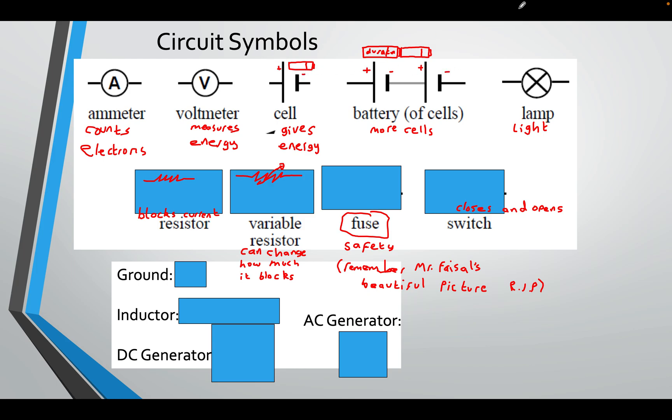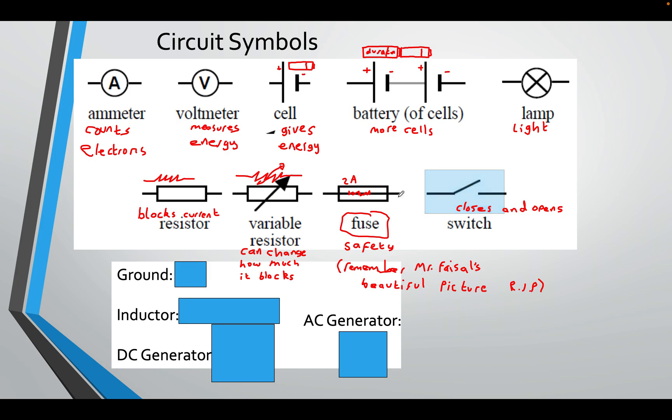A lamp has an X in it. A resistor blocks the current and it looks like a rectangle or a squiggly line. A variable resistor, also a rectangle or a squiggly line, but with an arrow to show that you can change the value of how much the resistance is. A fuse is a safety device. This is a resistor with a wire in the middle, a straight wire in the middle. And what happens is electrons flow through it. And if the current is too much, it's designed to break. If I can have a maximum current of two amps, that means anything more than two amps, this fuse will break. We also, of course, have a switch, opens and closes like a bridge.